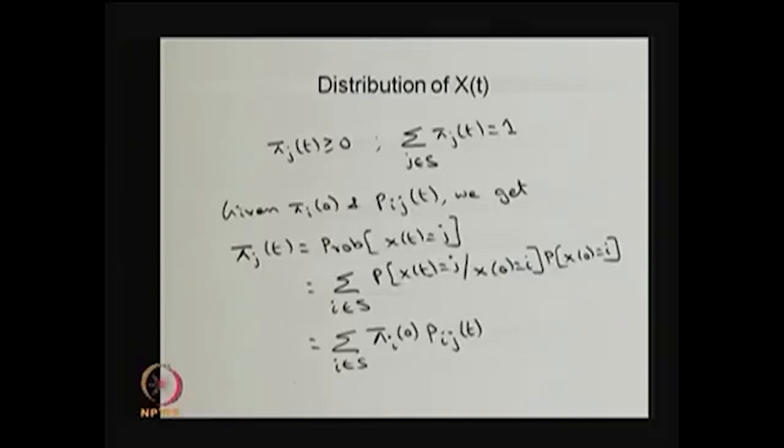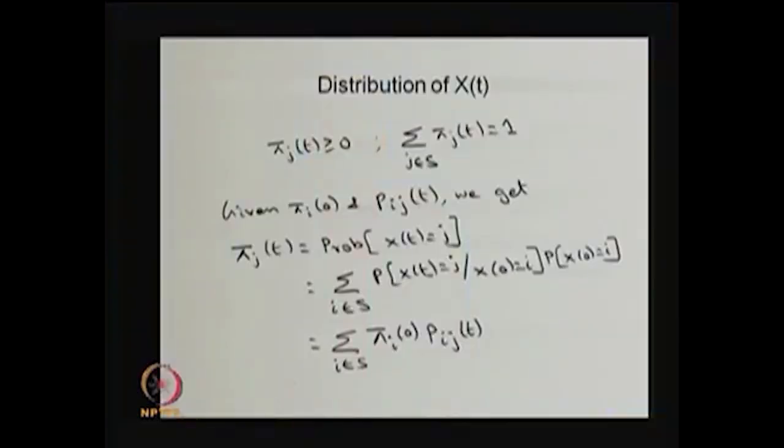In this lecture, I started with the Markov process, discussed the definition of a continuous-time Markov chain, explained the distribution of time spent in any state before moving to another, and introduced the infinitesimal generator matrix. Using the Chapman-Kolmogorov equation, we derived both the forward and backward Kolmogorov differential equations. Solving either equation gives p_ij(t), from which the distribution of X(t) can be obtained. The next lecture will cover a simple example of a continuous-time Markov chain, the stationary limiting distribution, and the steady-state distribution.